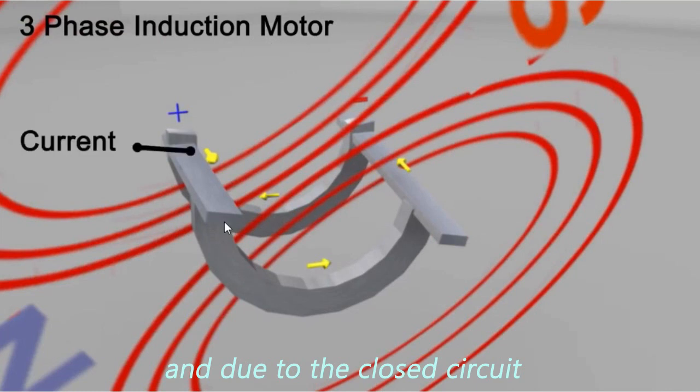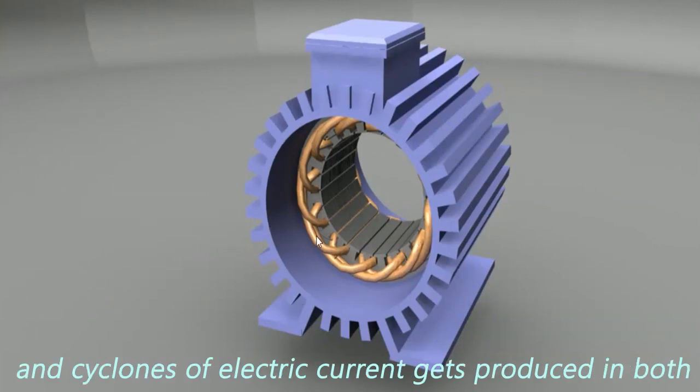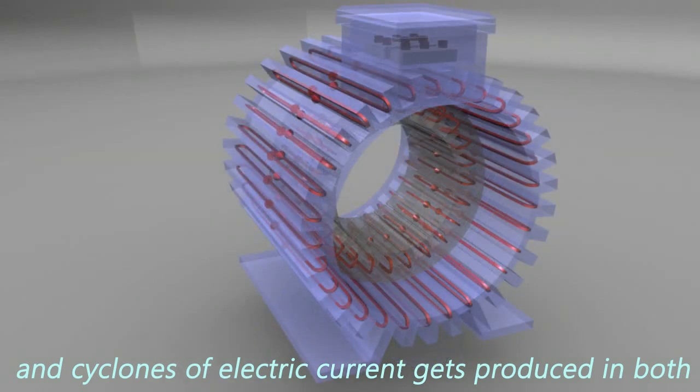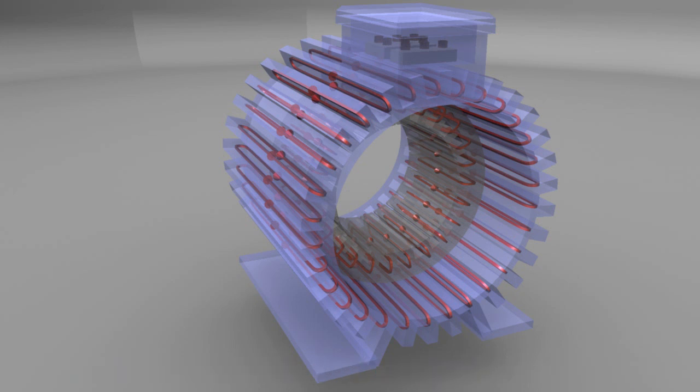And due to the closed circuit, AC currents start flowing in that. This also applies to the stator core and the frame. And cyclones of electric current gets produced in both. This cause excessive loss of energy in form of heat. And this current is known as eddy current.